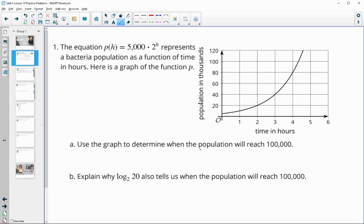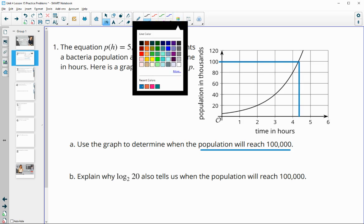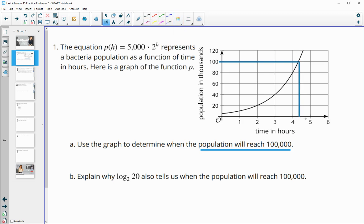So if we want to know when the population is going to reach 100,000, that's along this vertical axis. So then we can go find 100,000 and just kind of draw over until it reaches the graph and intersects with our graph and then draw straight down to the horizontal axis and give a little estimate of what that value is. So that's maybe like 4.25 hours or something similar to that.